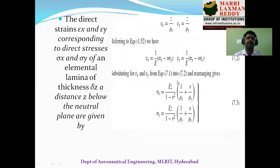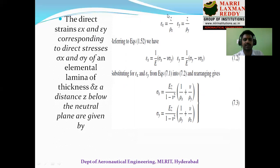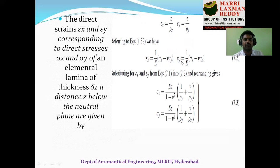Since we applied bending moments, we first write the strains in the x and y directions. Strain in the x direction is given by epsilon x equal to z divided by rho x, and epsilon y equal to z divided by rho y. This is the relationship between strain and curvature from previous studies. Also from mechanics of solids, the stress-strain relationships are: epsilon x equal to (1/E)(sigma x minus nu times sigma y), and epsilon y equal to (1/E)(sigma y minus nu times sigma x), for the two-dimensional case.